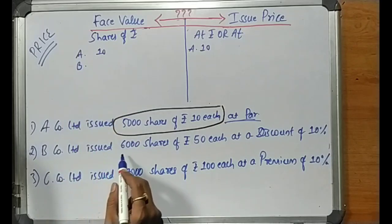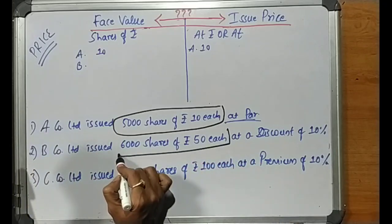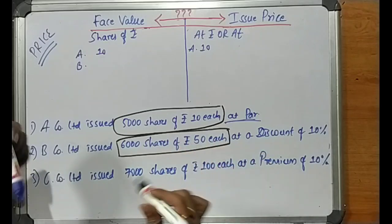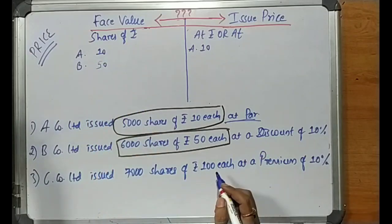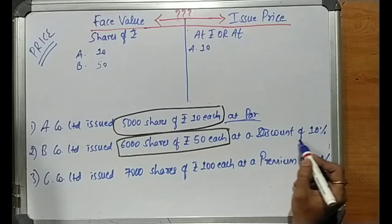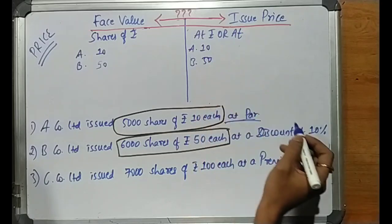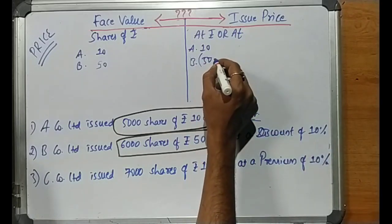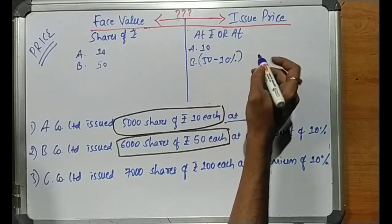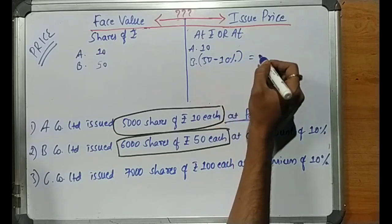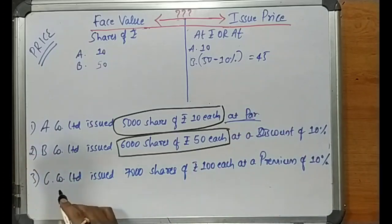Second case: B Company Limited issued 6000 shares of rupees 50 each. Breaking the sentence — the first price, rupees 50, is our face value. These shares are issued at a discount of 10%. So 10% of 50 is 5 rupees. Issue price = 50 minus 5 = 45 rupees per share.